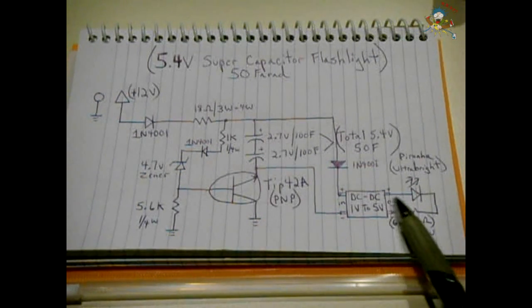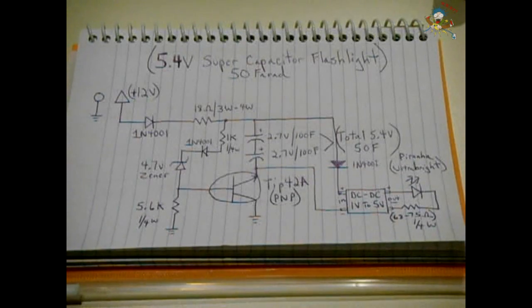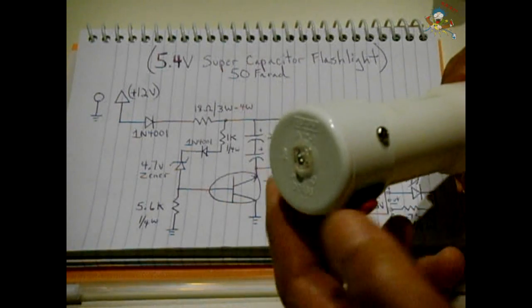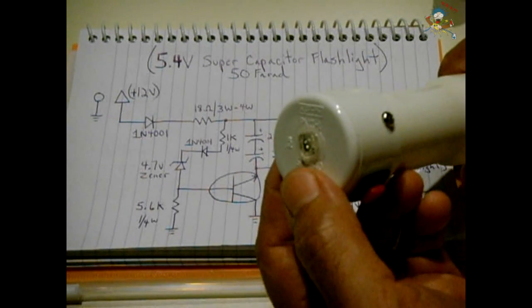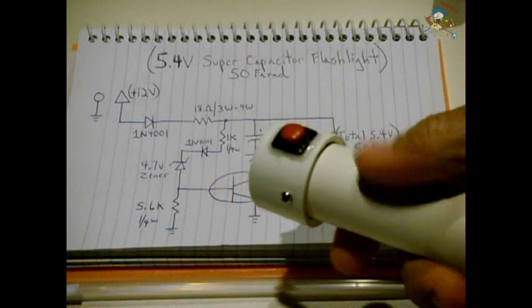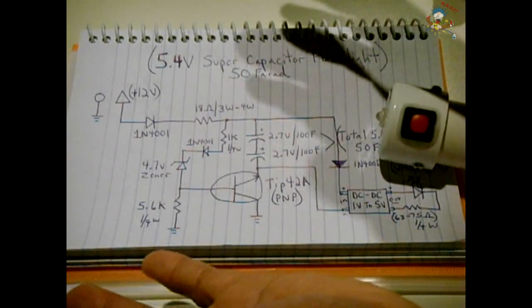The output, you have your ultra-bright Piranha LED. Now, I really like these Piranha LEDs. They have a very wide beam, so when you point the flashlight, you turn it on, it's very bright. I don't want to blind the camera, but the light comes out in a nice wide angle.